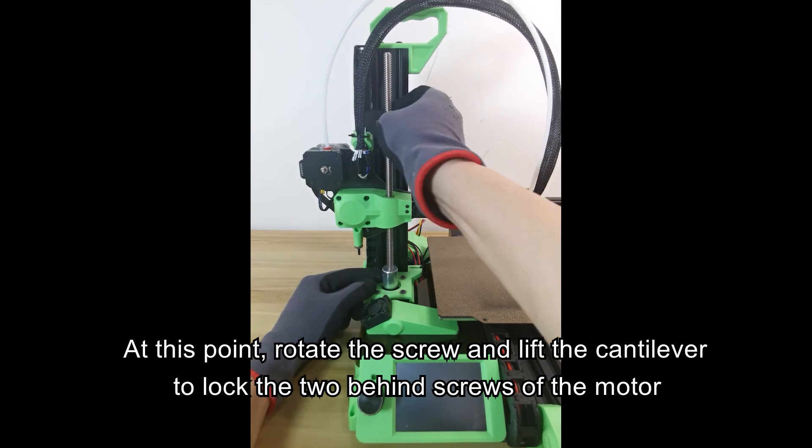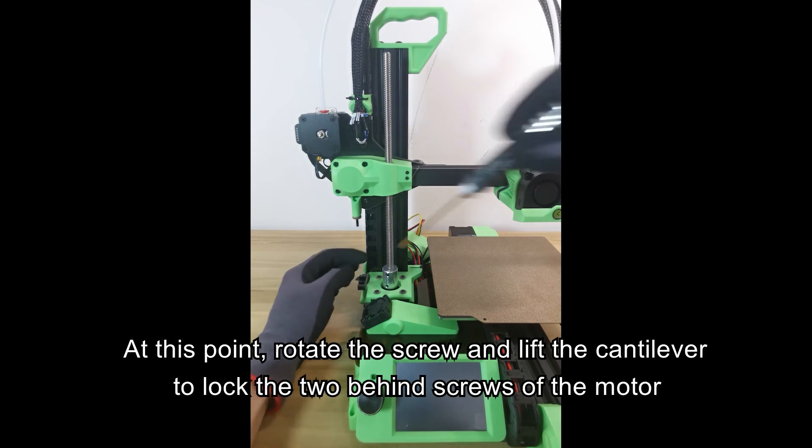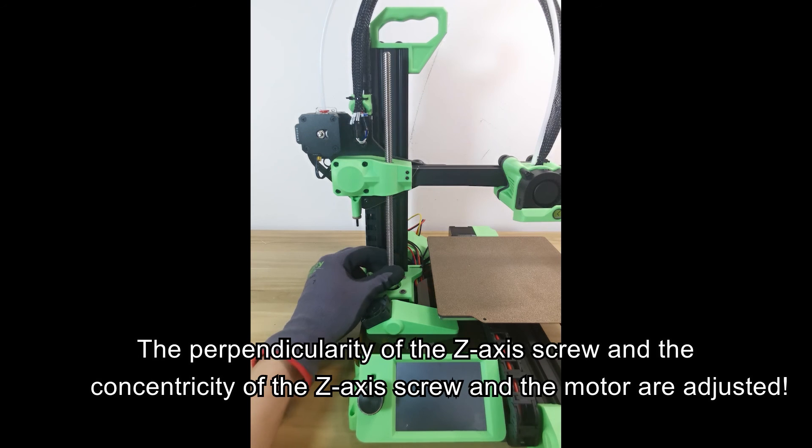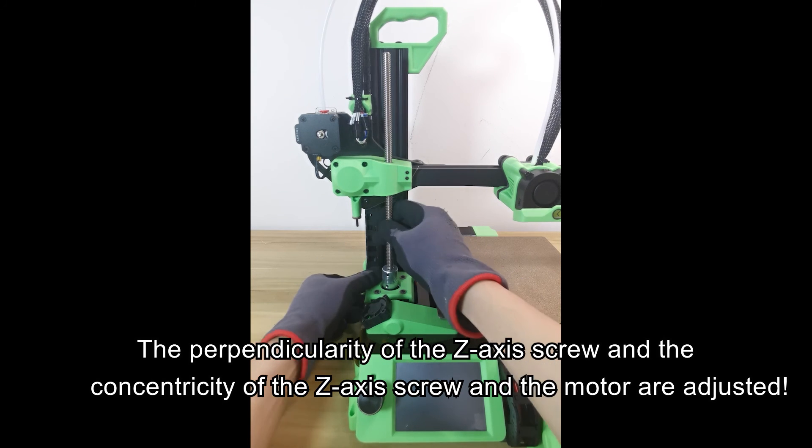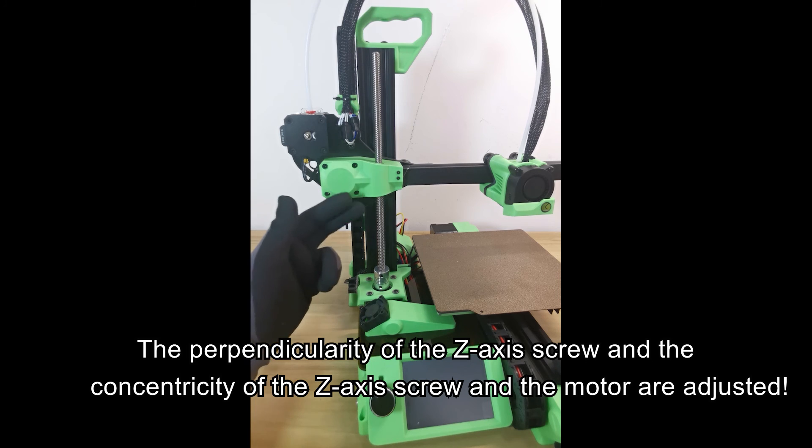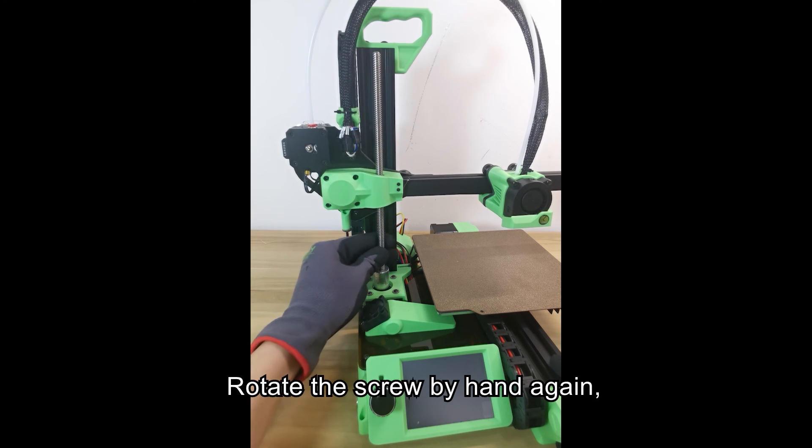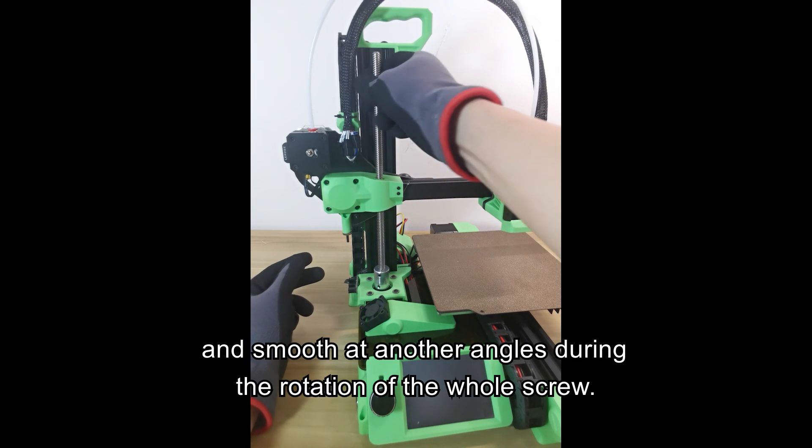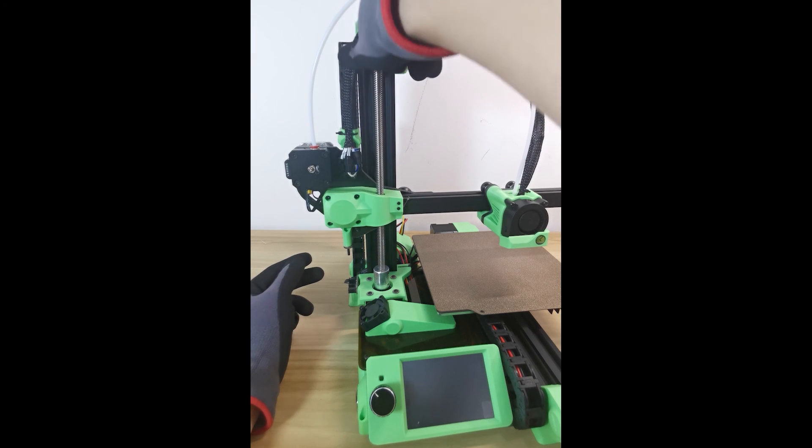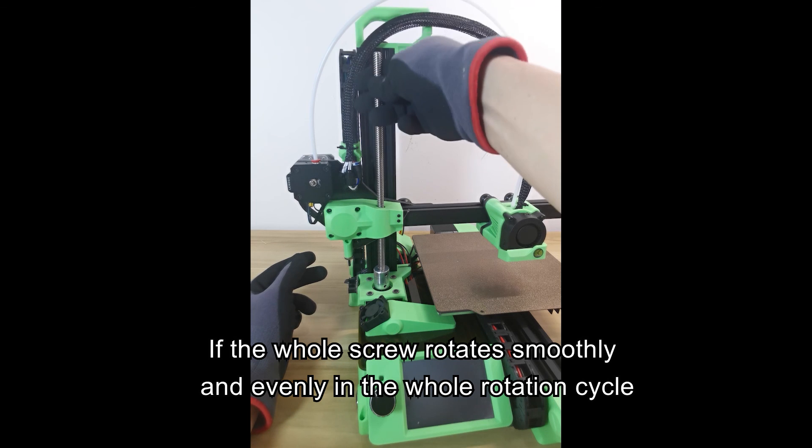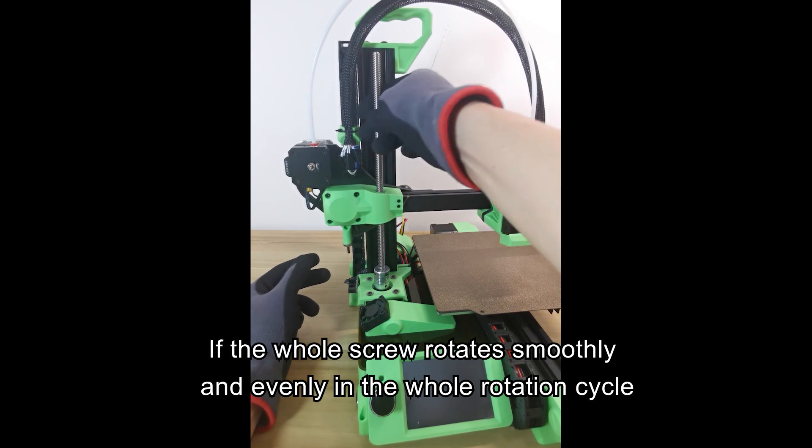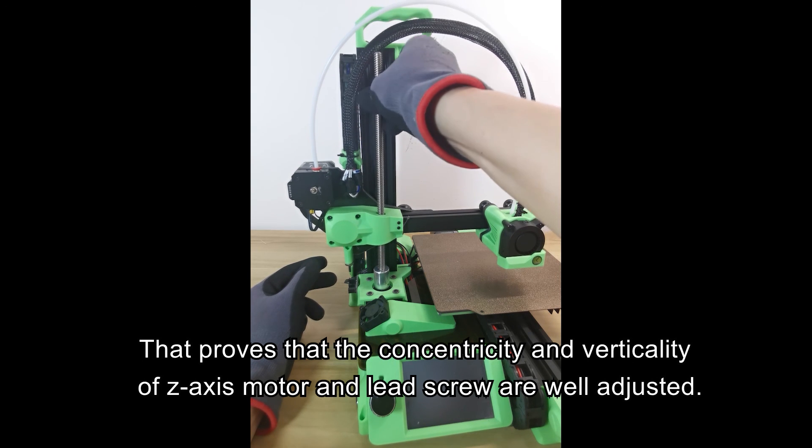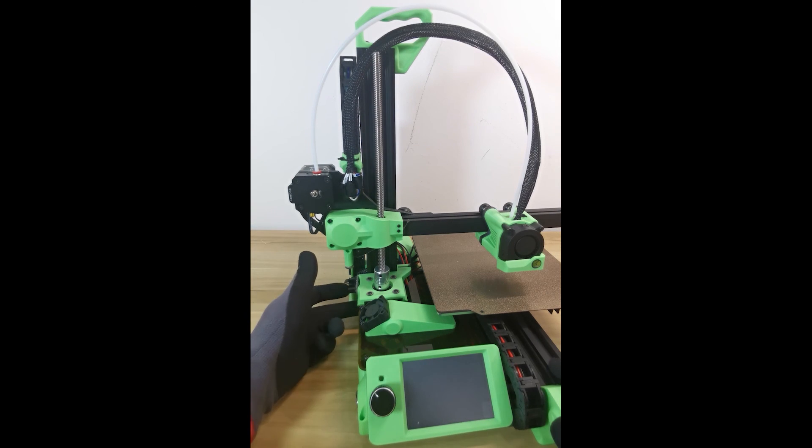At this point, rotate the screw and lift the cantilever to lock the two rear screws of the motor. After the four screws are tightened, the perpendicularity and concentricity of the Z-axis screw and motor are adjusted. Rotate the screw by hand again and feel whether the whole lead screw will be stuck at certain angles and smooth at others during rotation. If the whole screw rotates smoothly and evenly in the whole rotation cycle, that proves that the concentricity and verticality of the Z-axis motor and lead screw are well adjusted.